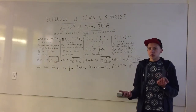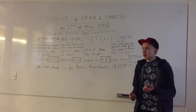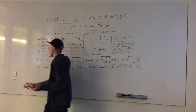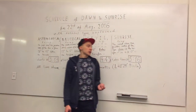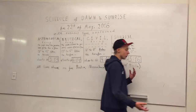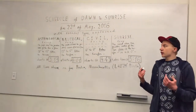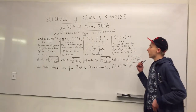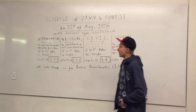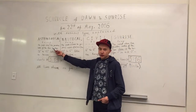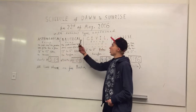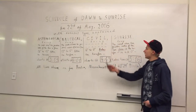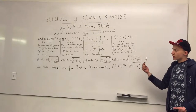Did you know that there are different types of twilight? We have four different types: astronomical is the first one, then nautical the second one, civil the third one, and finally the sunrise itself.